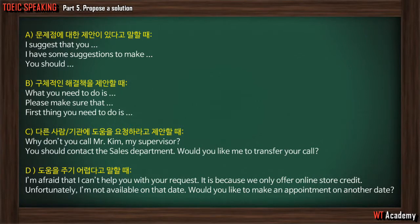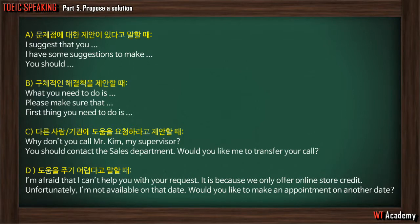Within proposing a solution, there are several methods. First method, Category A: possible suggestions or ideas. You can say 'I suggest that you do something,' or 'I have some suggestions to make' and then list them out — one, two, three. Or simply 'you should try doing this first, then this second, then maybe the third.' Those are all suggestions or ideas that the customer representative could tell customers who are having problems.